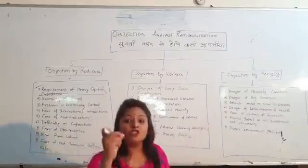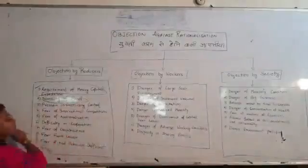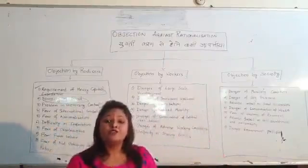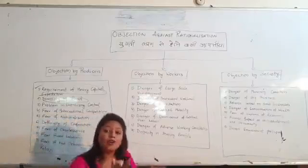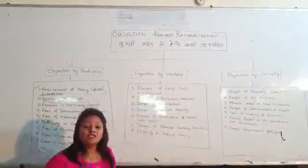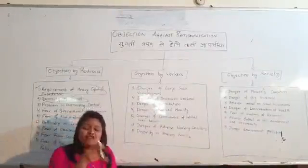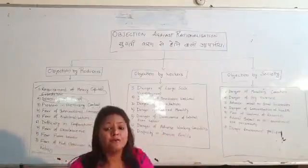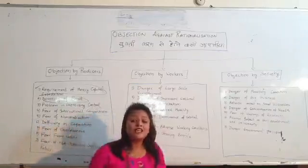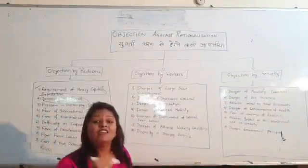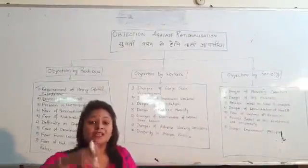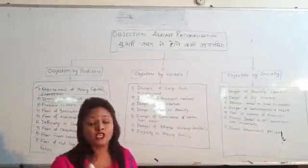The second objection from the point of view of the producer is the scarcity of funds. Because he is always having the scarcity of funds, it is very difficult for him to mobilize all the resources of capital, since borrowing this capital is a very costly problem. The producer does not want to promote rationalization because he does not have enough capital to make such a big change in his industry.